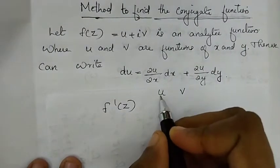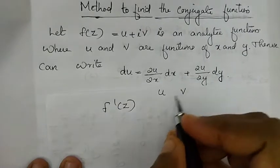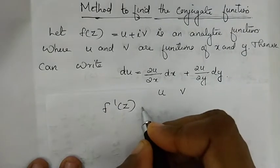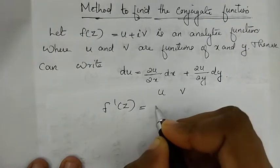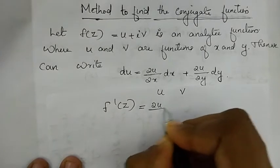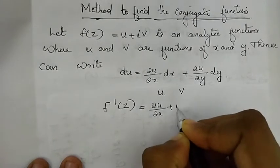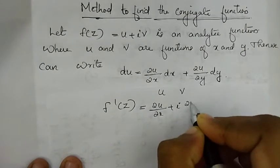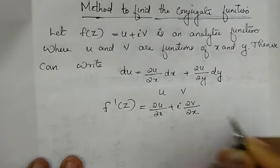Separating into real part and imaginary part, we can write the value of f'(z) as ∂u/∂x + i·(∂v/∂x).